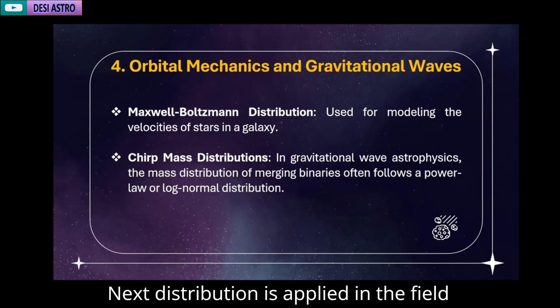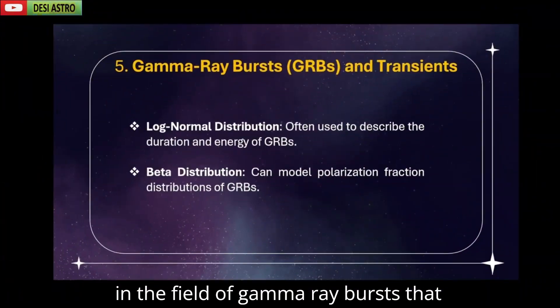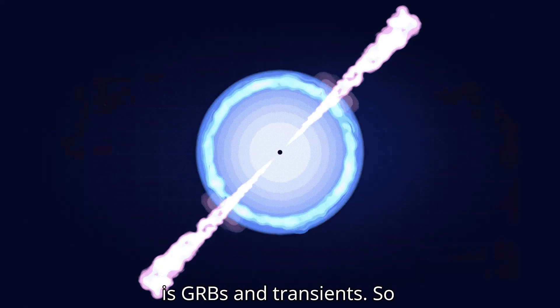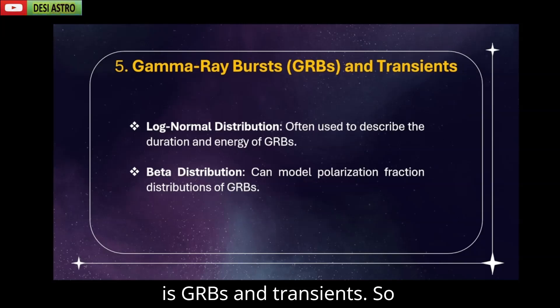Next distribution is applied in the field of gamma-ray bursts, GRBs and transients. Log normal distribution is often used to describe the duration and energy of GRBs. The duration T90, the time in which 90% of burst energy is emitted, follows a log normal distribution.